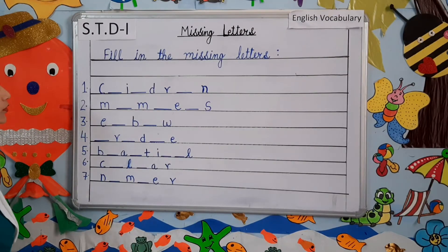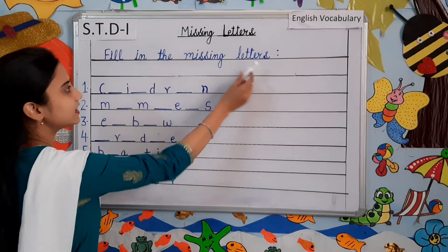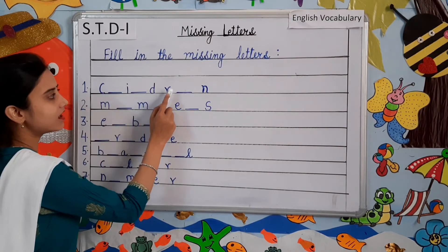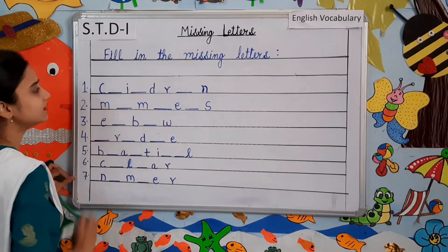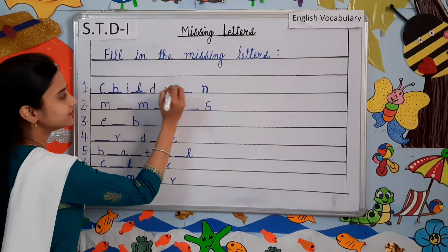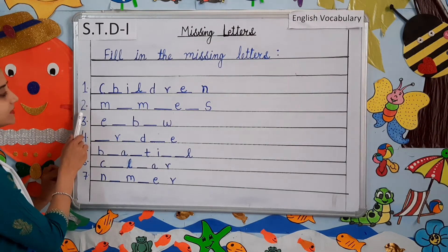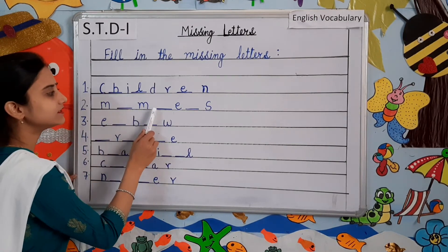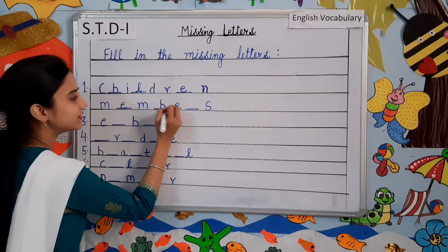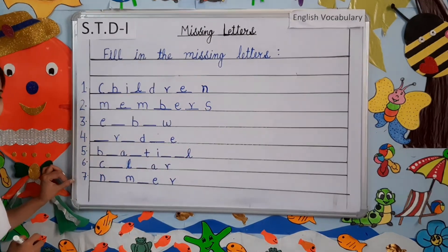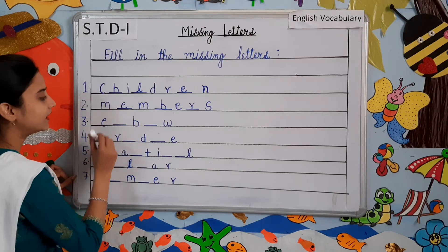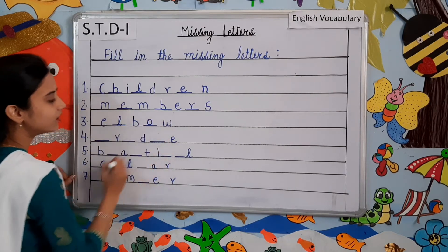Now students, look at the board. Fill in the missing letters. Number one: C-I-D-R-N. We have to fill in the given missing letters: C-H-I-L-D-R-E-N. Children. Number two: M-M-E-S. So M-E-M-B-E-R-S. Members. Number three: E-B-W. E-L-B-O-W. Elbow.